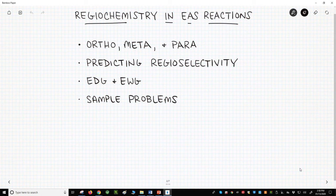We'll then move to the factors that influence the regioselectivity of the reaction and formally discuss electron donating and electron withdrawing groups. We'll finish with some sample problems.